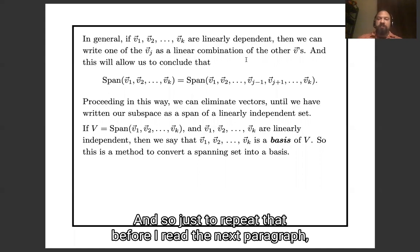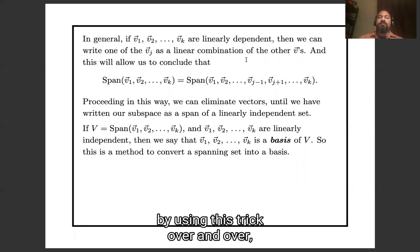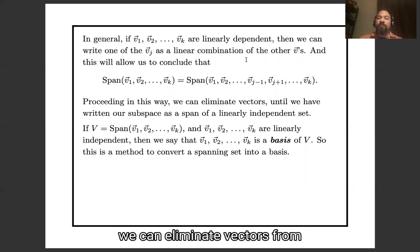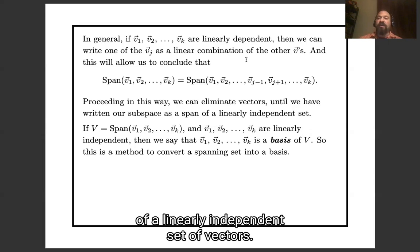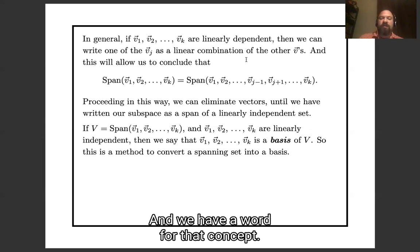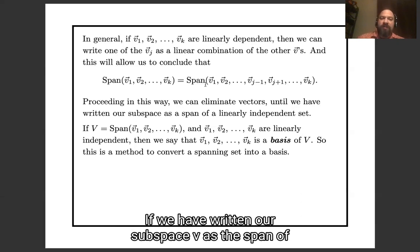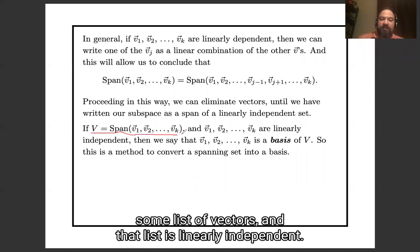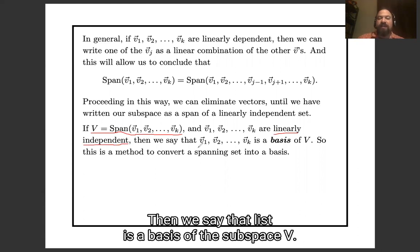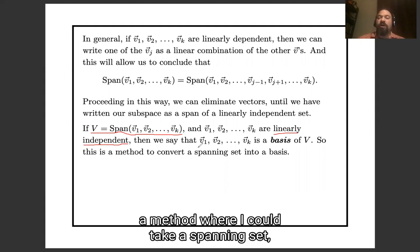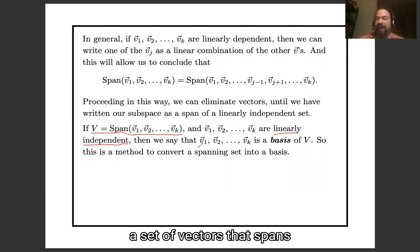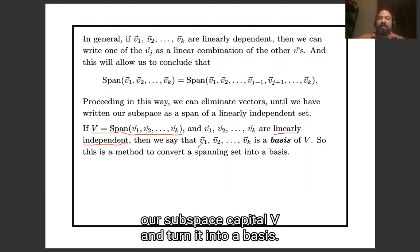By using this trick over and over, we can eliminate vectors from our list until we have written our subspace as the span of a linearly independent set of vectors. We have a word for that concept: if we have written our subspace V as the span of some list of vectors, and that list is linearly independent, then we say that list is a basis of the subspace V. So what I've just been discussing is a method where we take a spanning set and turn it into a basis.